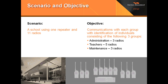Our scenario is a school using one repeater and 11 radios. The objective is to have each group communicate with identification of individuals, broken up into three different groups: administration, teachers, and maintenance. You'll have three administrators, five teachers, and three maintenance personnel.